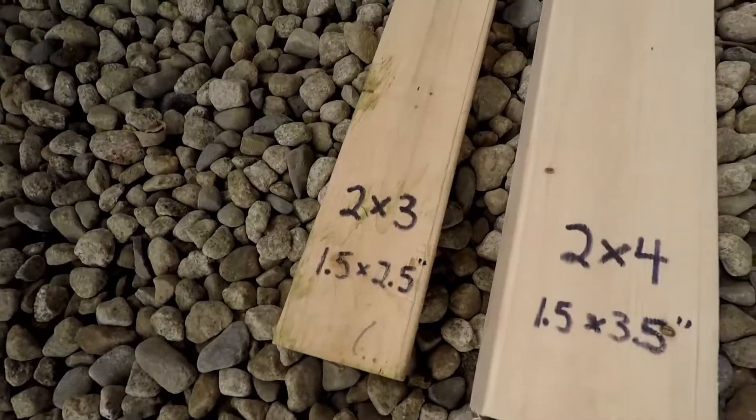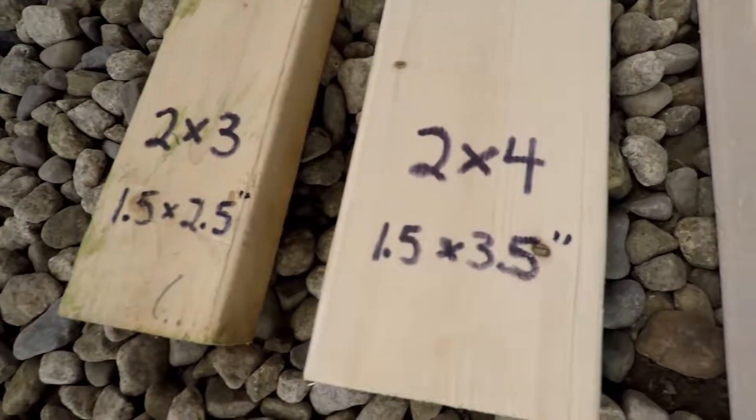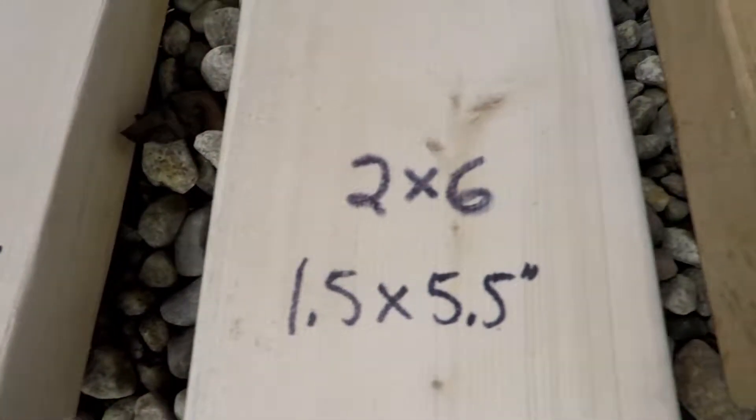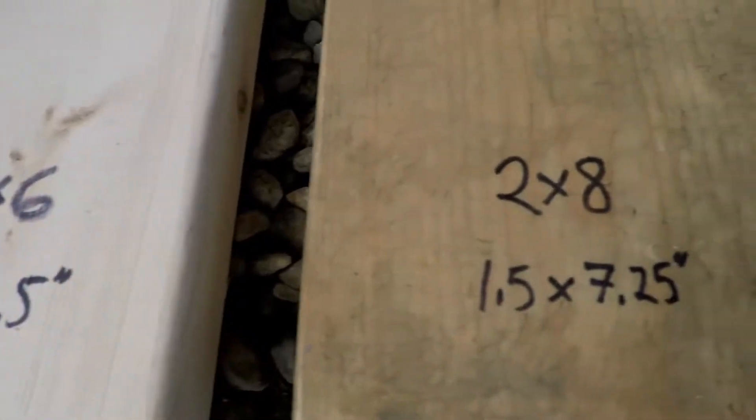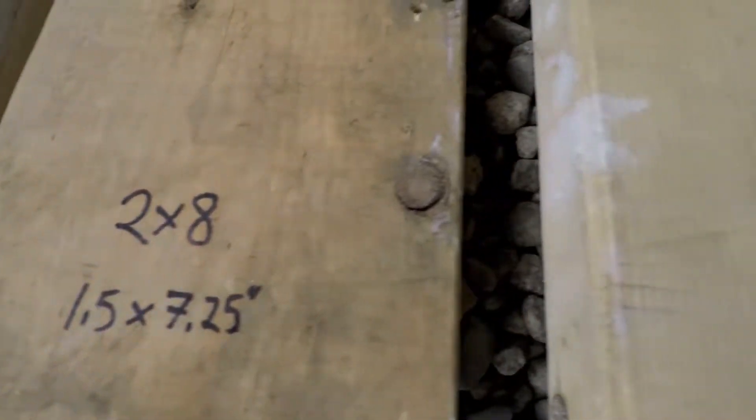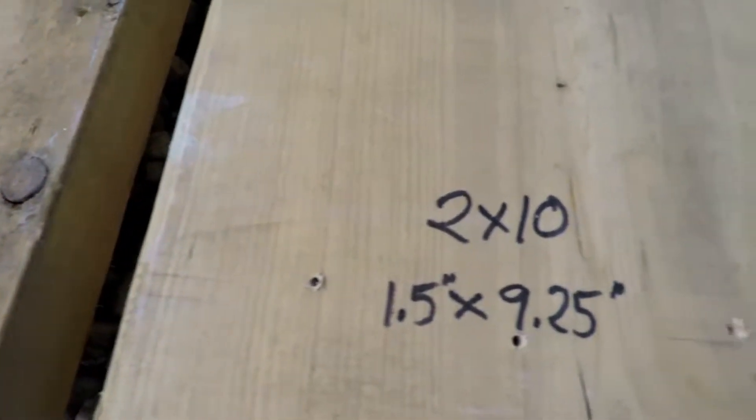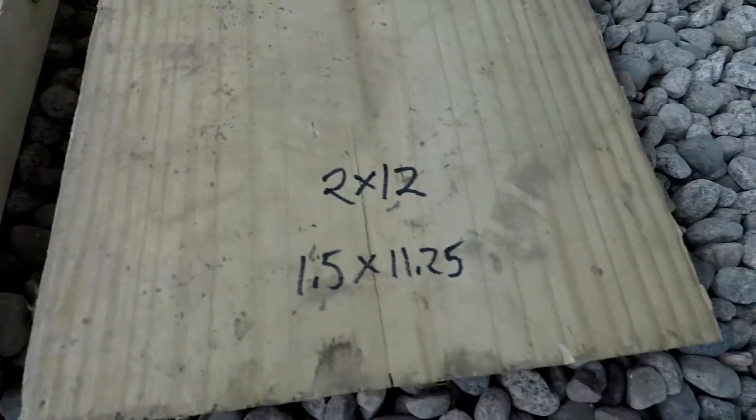There's your basic dimensional lumber: two by three, two by four, two by six, two by eight, two by ten, and two by twelve.